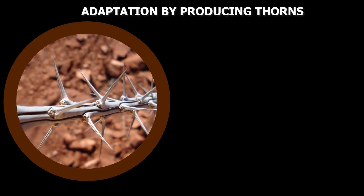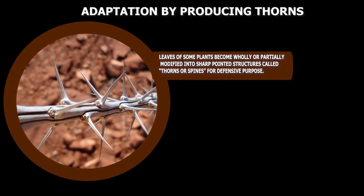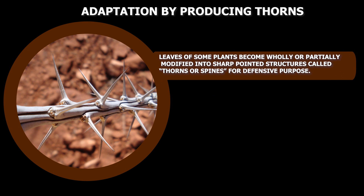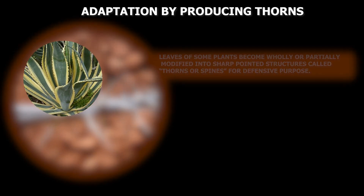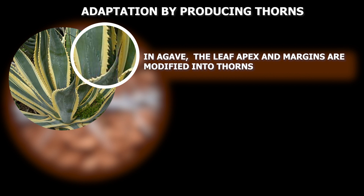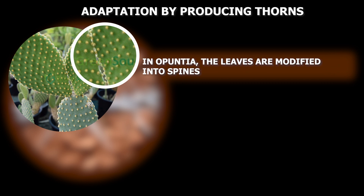Some plants adapt by producing thorns. Leaves of some plants become wholly or partially modified into sharp pointed structures called thorns or spines for defensive purposes. For example, in agave the leaf apex and margins are modified into thorns. In opuntia, the leaves are modified into spines.